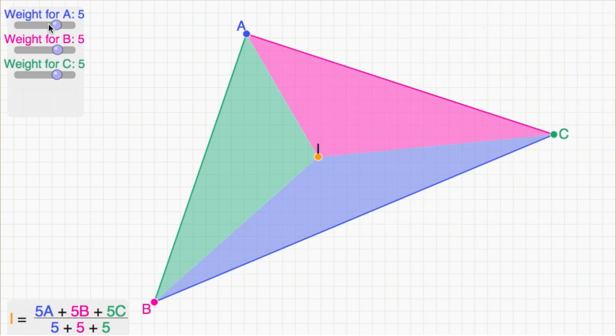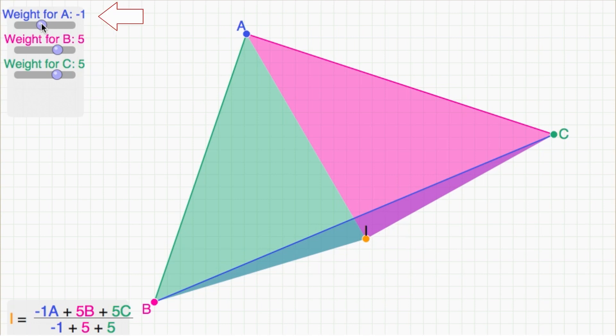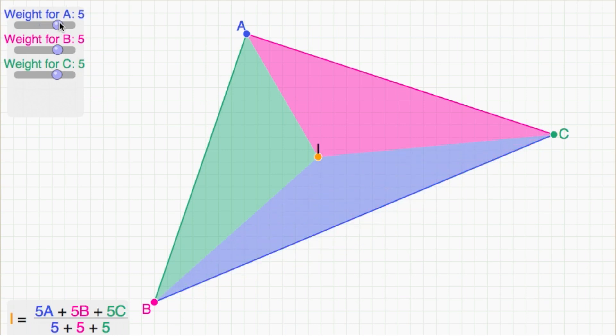If we can determine the weights needed to produce i, we can simply check their signs. If one or two of them is negative, i is outside the triangle. And otherwise, i is inside.